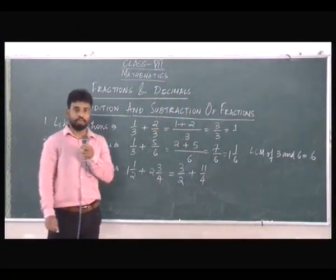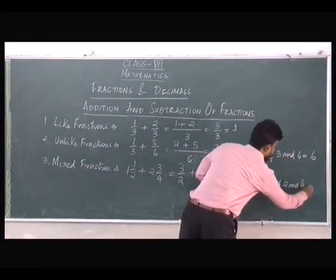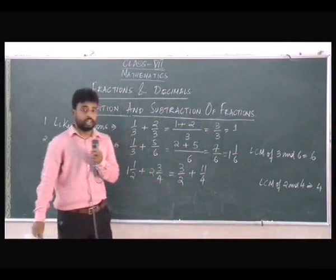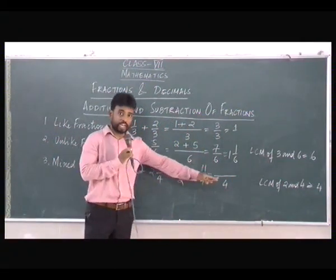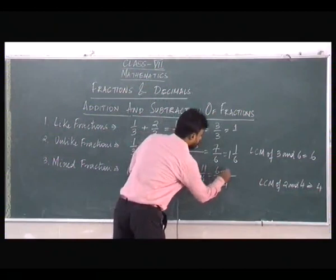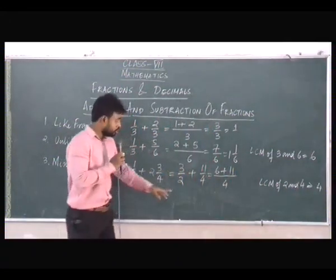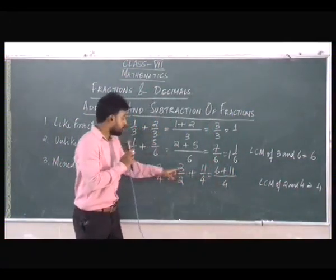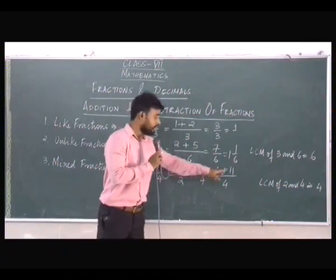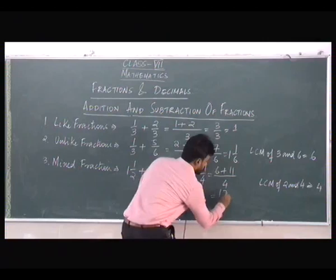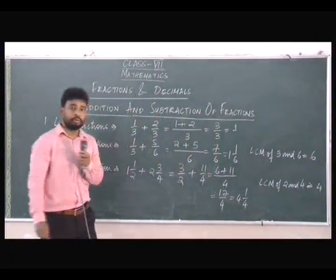Next we'll find out the LCM of 2 and 4, which gives us 4. We'll write 4 as the denominator. Now 2 goes 2 times in 4, so we multiply 3 by 2 to get 6. And 4 goes 1 time in 4, so 1 into 11 gives us 11. So 6 plus 11 gives you 17 by 4, which can be written as the mixed fraction 4 and 1 by 4 as the answer.